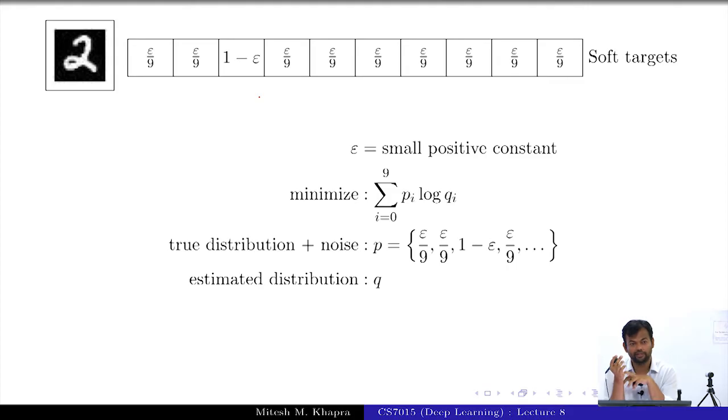So, you see why this acts as a regularization. Why does it act as a regularization? What is the aim of regularization? Do not overfit on the training data, right. To overfit on the training data, what should it have done? It should have treated only the correct label.